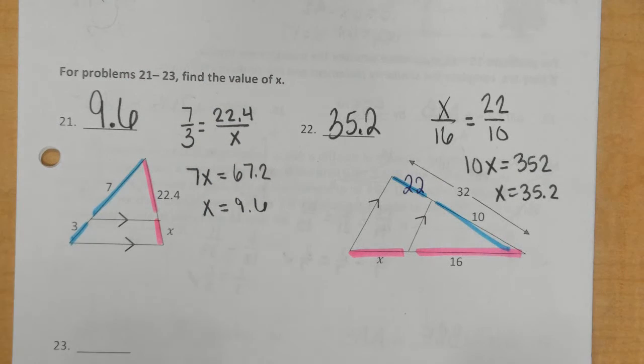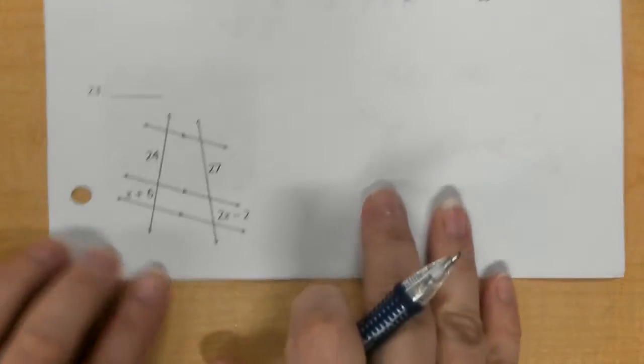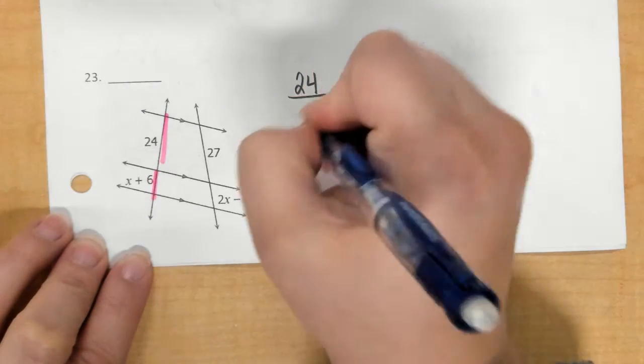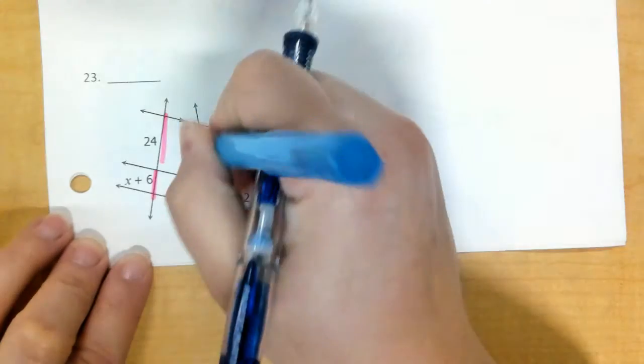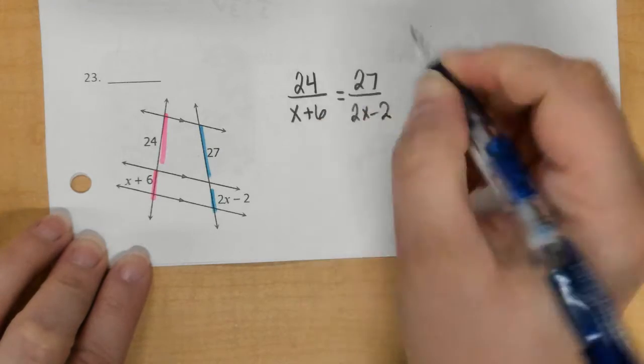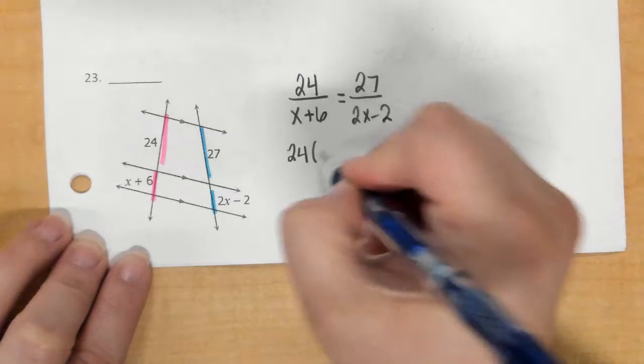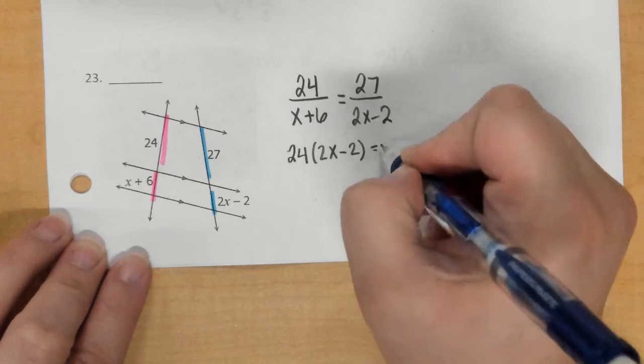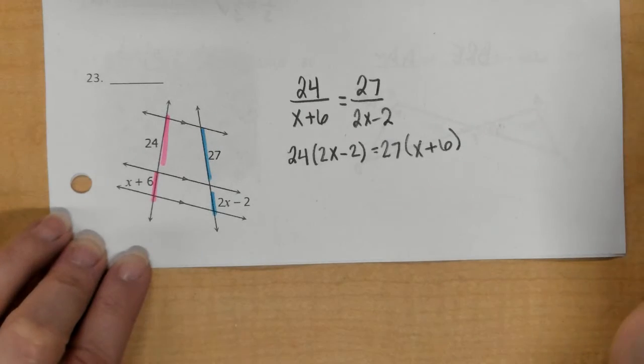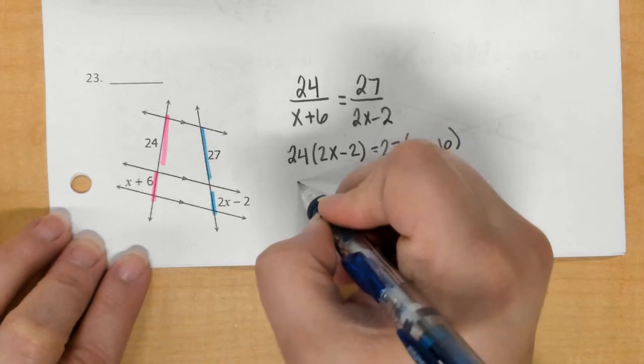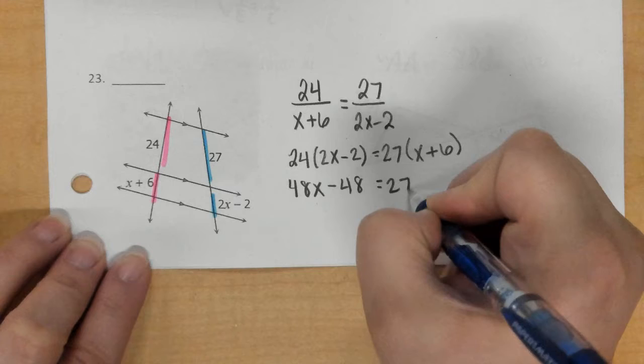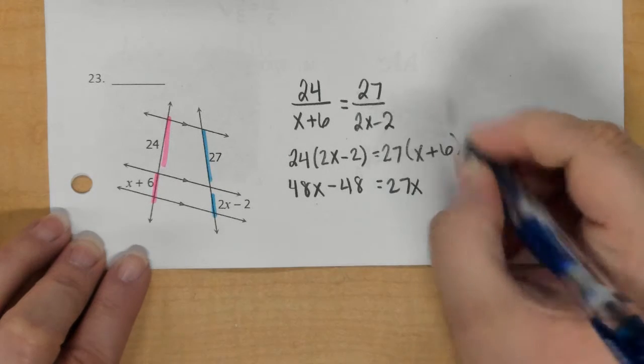And then for 23, I would do 24 over x plus 6, and then 27 over 2x minus 2. So, here we're going to have a little bit of some larger numbers. So let's distribute. 24 times 2x is 48x. Distribute again, we get negative 48. 27x, and then that would be 162.